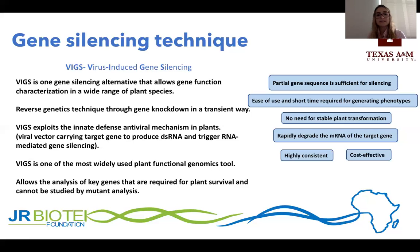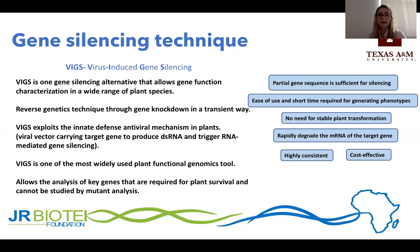With VIGS, you don't need a stable plant transformation to analyze gene function, and in a short time you can already have the phenotype you are looking for. VIGS exploits the innate defense antiviral mechanism in plants, which is the RNAi mechanism, allowing rapid degradation of your specific mRNA region. VIGS is one of the most widely used plant functional genomic tools because of its high consistency and because it's cost-effective.